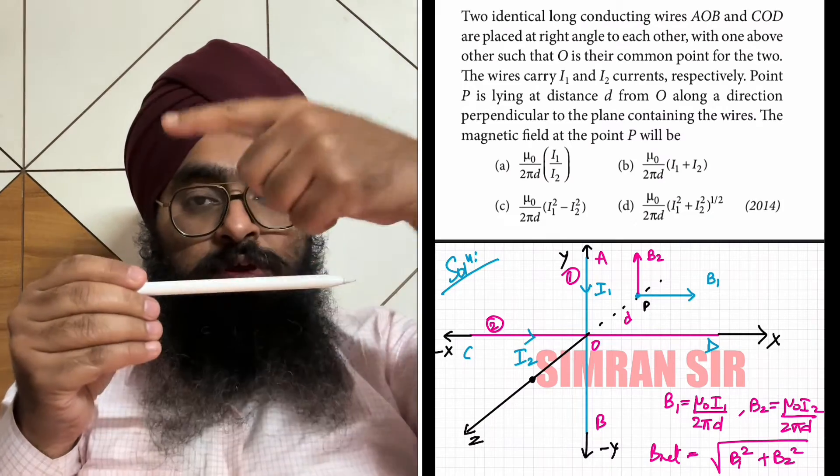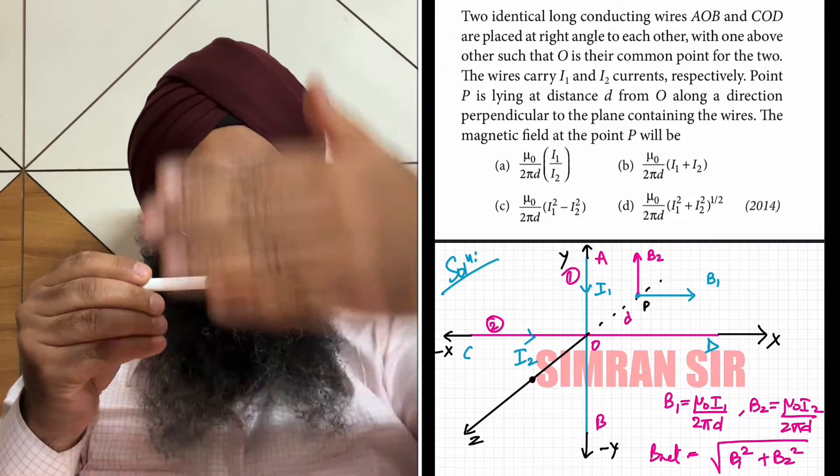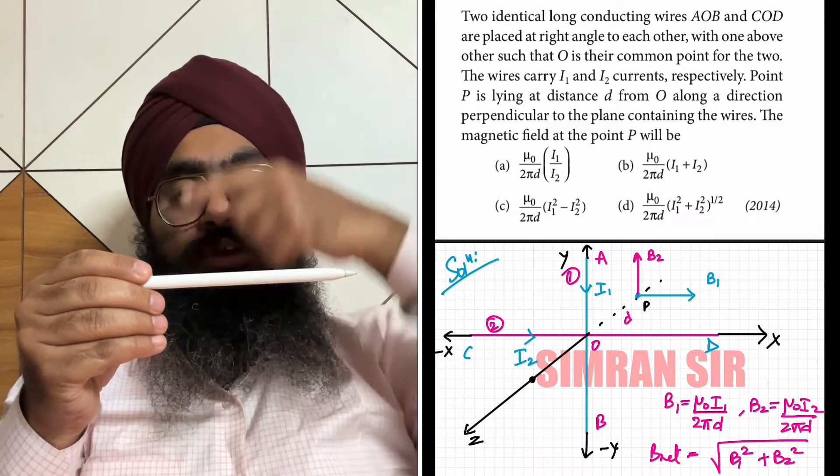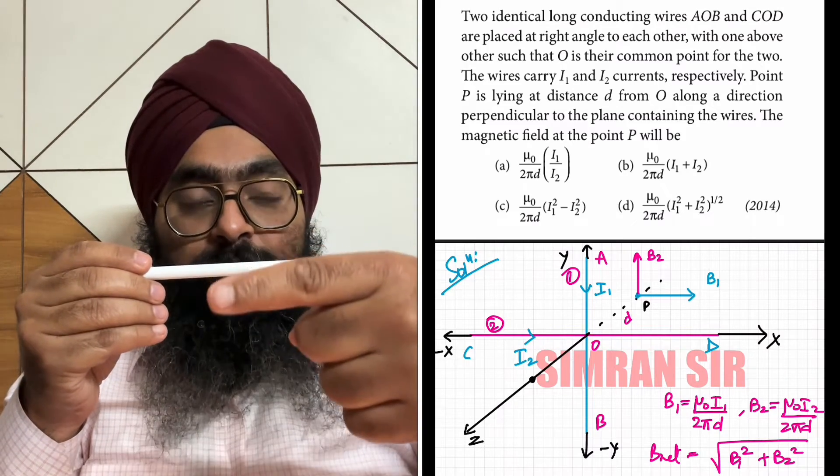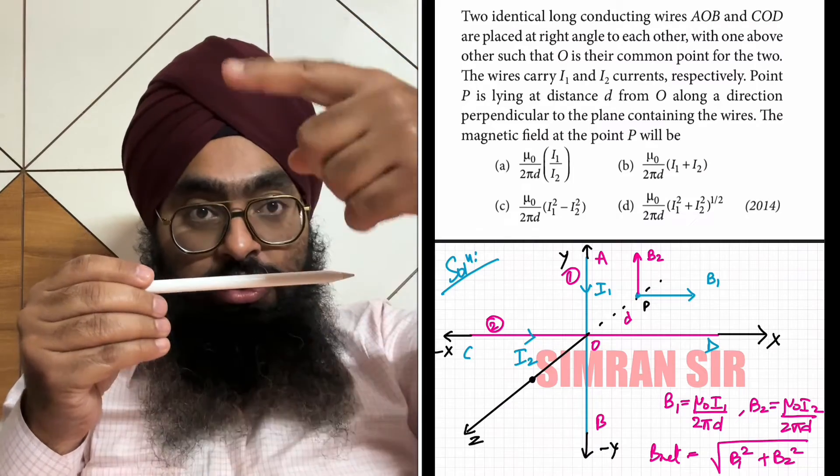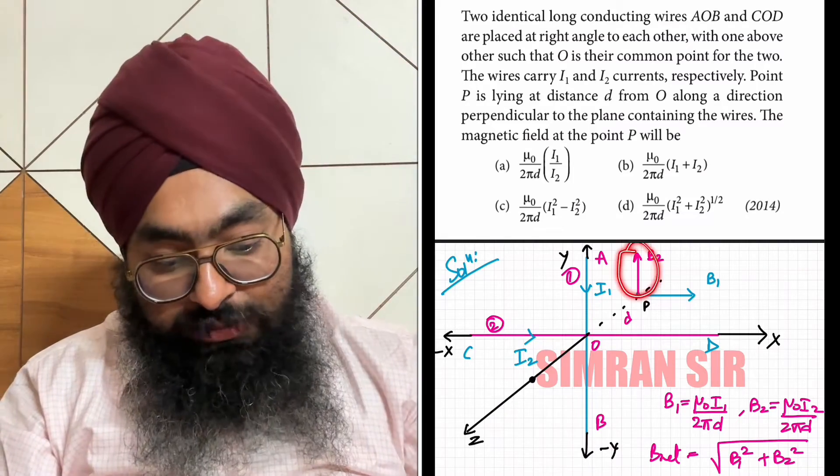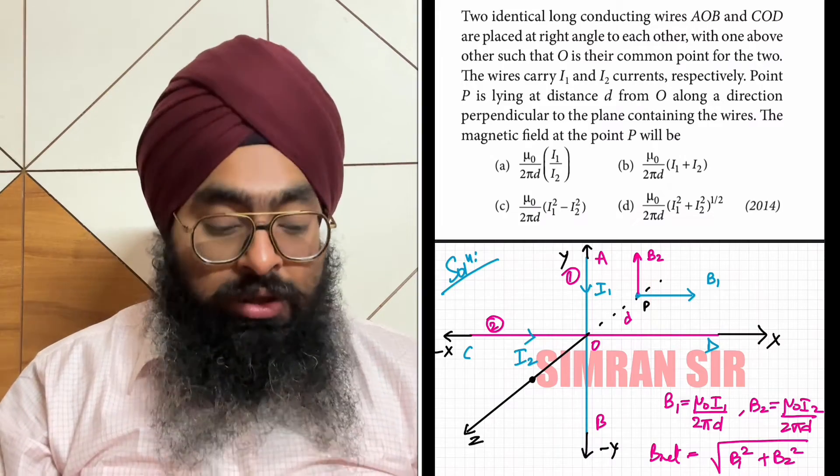The magnetic field is tangential, so at this point it goes upward. This means B2 is vertically upward, while B1 is horizontal. The two are at 90 degrees to each other.